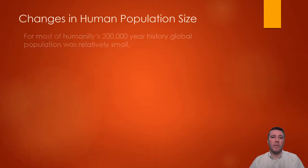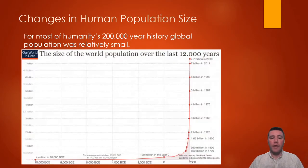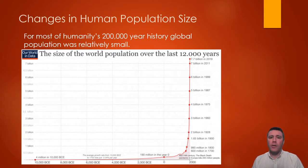As a species, anatomically modern humans have existed for approximately 200,000 years, according to the fossil record. For the vast majority of that time, our population remained relatively small. Humans were primarily gatherers and hunters, and relied upon whatever food they were able to find or lucky enough to catch. This meant that a huge amount of time and energy was dedicated to simply just surviving.